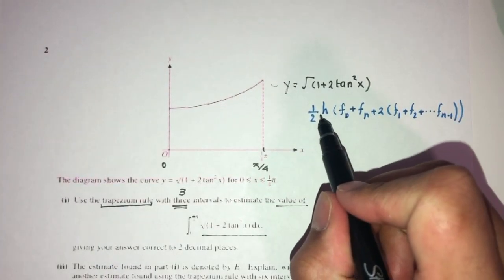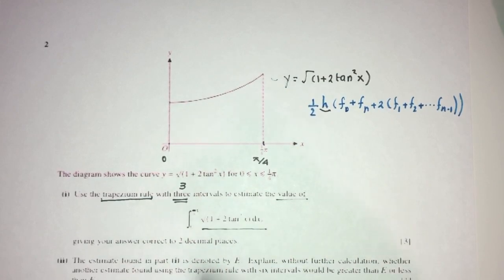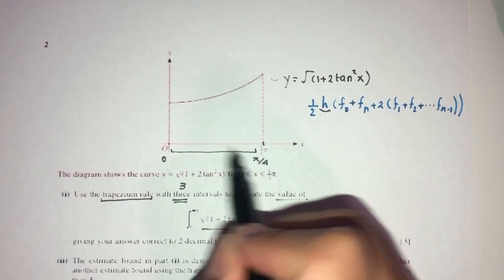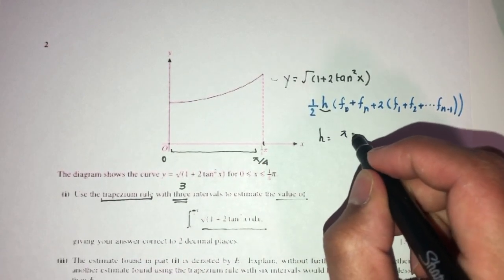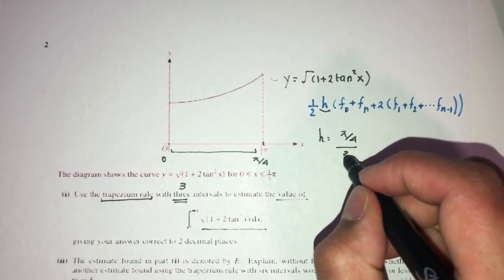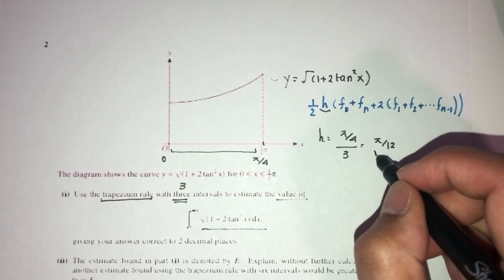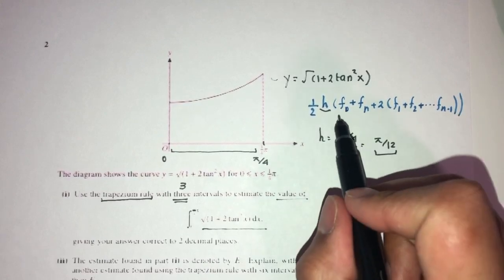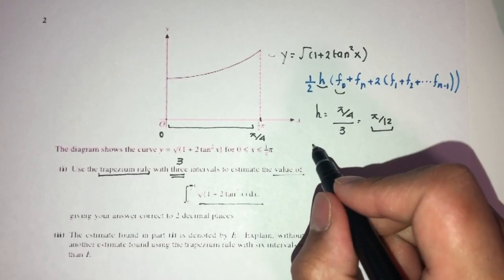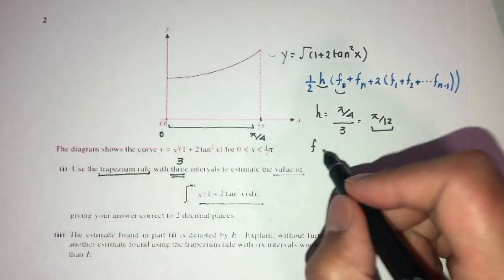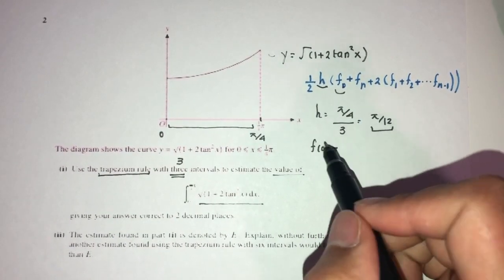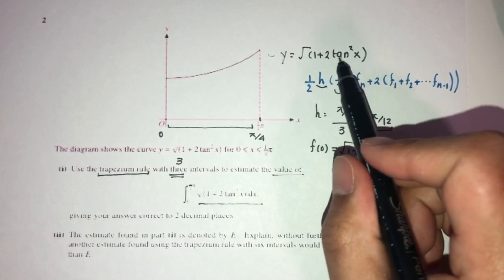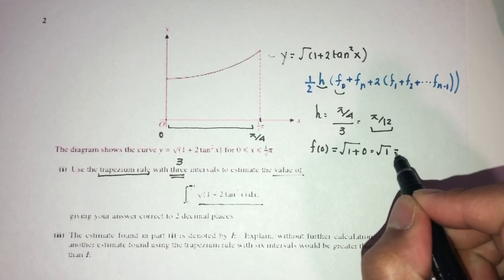Now we have to find h, the width of the interval. Because we are using three intervals, the whole interval is π/4 minus 0, which is π/4. Divided by 3, that gives h = π/12. Now f(0) is the initial value at 0: replacing into the equation gives root of (1 + 2·tan²(0)) = root of (1 + 0) = 1.